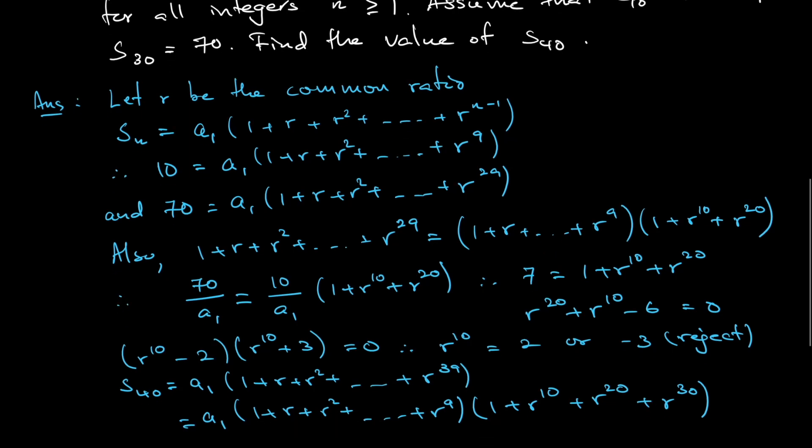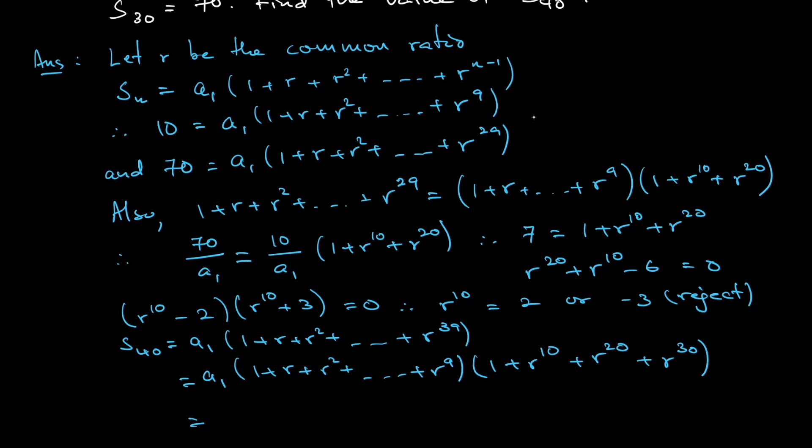Substitute the numbers in. a1 times 1 plus r all the way to r to the power of 9, that is 10, which is S10. Multiply it by 1 plus r to the power of 10. We just found that r to the power of 10 equals 2, so this is 2, this will be 2 squared, and this will be 2 to the power of 3. If you simplify this at the end, you get 150.